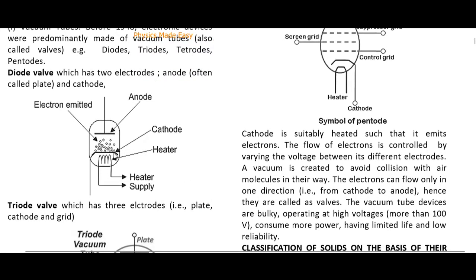In a diode vacuum tube, we have a cathode which is indirectly heated. Heat is supplied to the cathode, it emits electrons, and those electrons are collected at the anode. A diode works in one direction only — if the anode is positive with respect to the cathode, it conducts; if negative, it does not conduct.